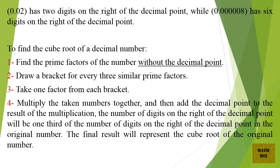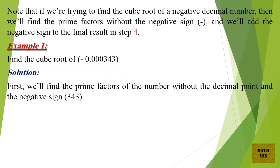The final result will represent the cube root of the original number. Note that if we're trying to find the cube root of a negative decimal number, then we'll find the prime factors without the negative sign, and we'll add the negative sign to the final result in step 4.